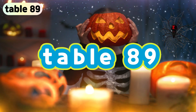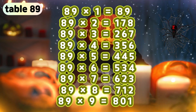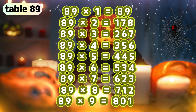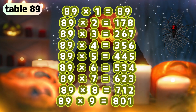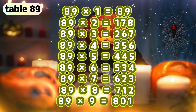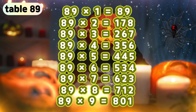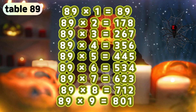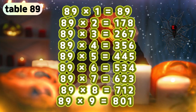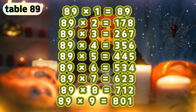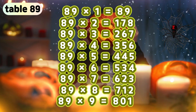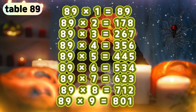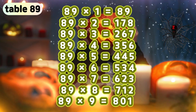Table 89. 89 times 1 is 89. 89 times 2 is 178. 89 times 3 is 267. 89 times 4 is 356. 89 times 5 is 445. 89 times 6 is 534. 89 times 7 is 623. 89 times 8 is 712. 89 times 9 is 801.